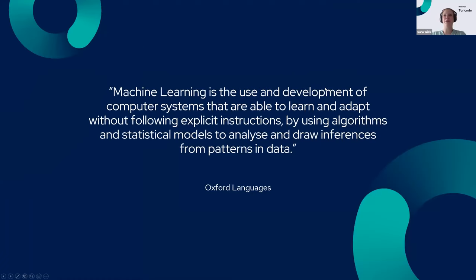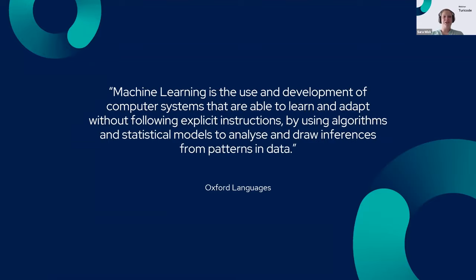So what is machine learning? It's something we all talk about. Oxford Languages defines it as: the use and development of computer systems that are able to learn and adapt without following explicit instructions, by using algorithms and statistical models to analyze and draw inferences from patterns and data. In layman's terms, the machine learns with exposure to data over time — just as we had to learn French vocabulary at school; we get better with time, we get better if we see a word more than once. Basically it's the same for the machine.